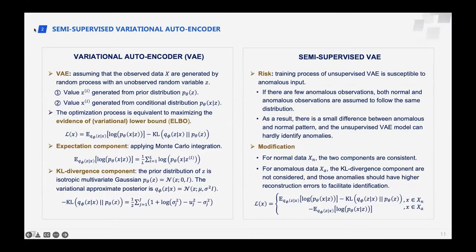Based on the extracted features, we use a VAE to detect anomalies. VAE assumes that the observed data X are generated by a random process with a latent random variable Z. Z is generated from the prior distribution P(Z), and X is generated from the conditional distribution. The optimization process is equivalent to maximizing the Evidence Lower Bound (ELBO), which can be divided into an expectation component and a KL divergence component.